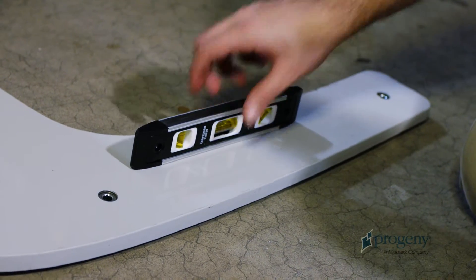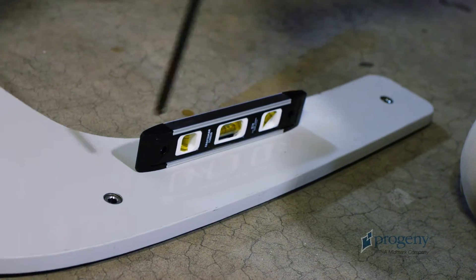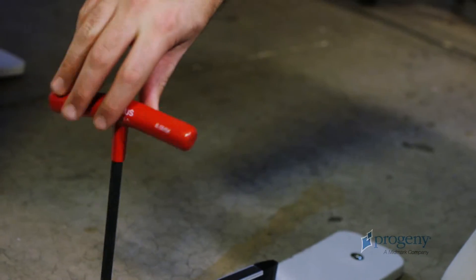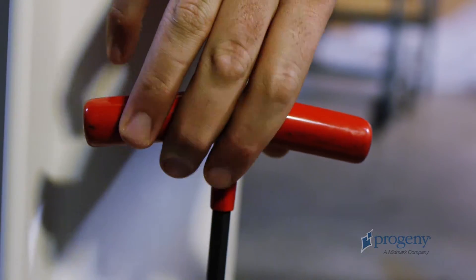Be sure to level the base using the adjustment screws. Use an 8 mm Allen wrench and turn counter-clockwise to adjust the base lower, and clockwise to adjust higher.